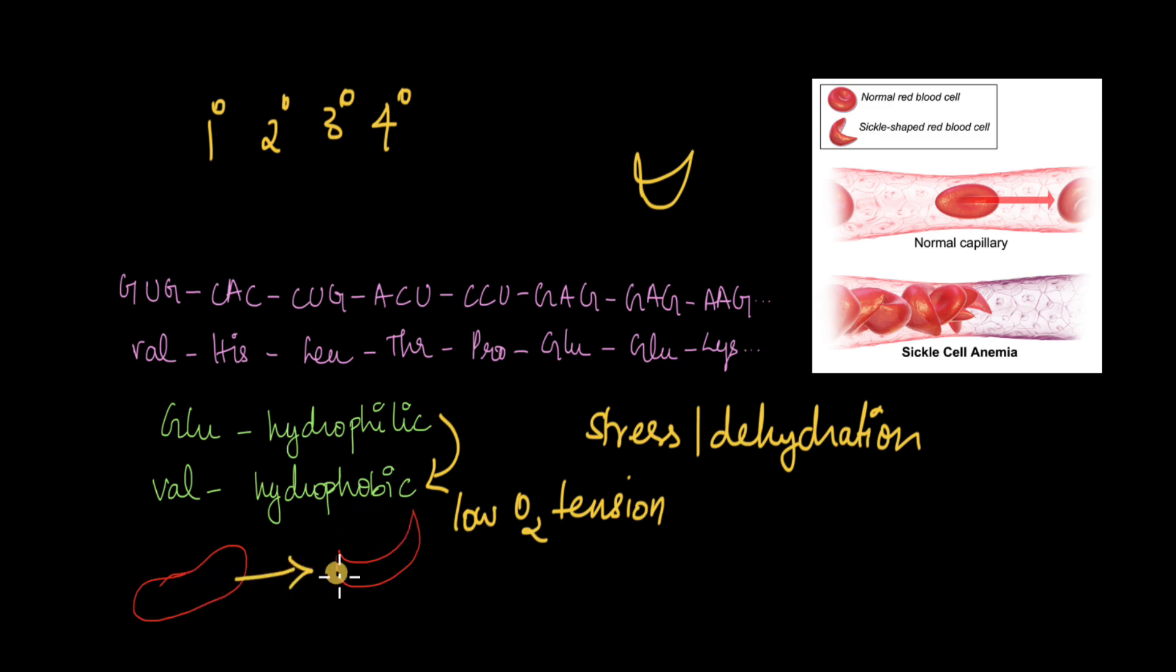The body recognizes the sickle shape red blood cell as something that is foreign or dangerous to the body and then it begins to destroy these red blood cells. So the cells do not receive enough oxygen.